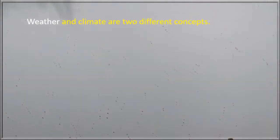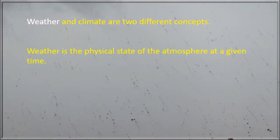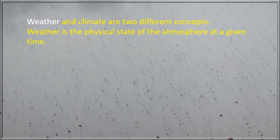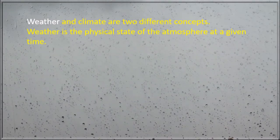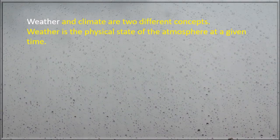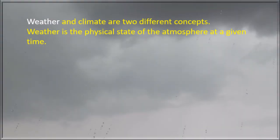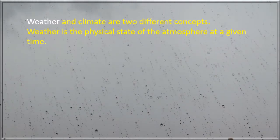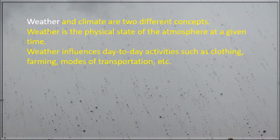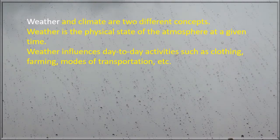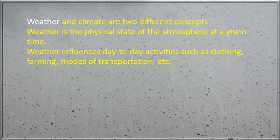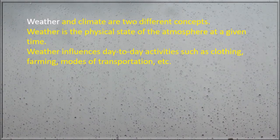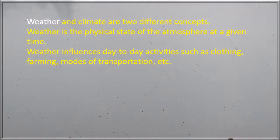Weather and climate are two different concepts. Weather is the physical state of the atmosphere at a given time. In simple terms, it refers to the day-to-day conditions of the atmosphere at a definite place and at a fixed time. Weather influences day-to-day activities such as clothing, farming, modes of transportation, etc.